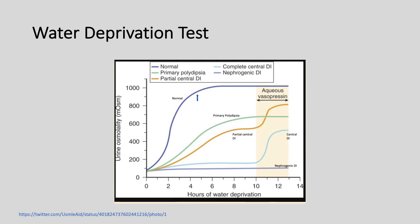It's important to note that with primary polydipsia, you're usually going to see hyponatremia, not hypernatremia, because the person drinks water first and drops their sodium. It could also be dangerous to do a water deprivation test in someone with primary polydipsia, because when you water-restrict them, they start diuresing, which could result in a very rapid correction of hyponatremia. If you already know that's what's going on, there's no reason to do a water deprivation test.